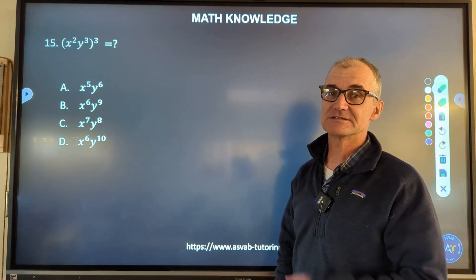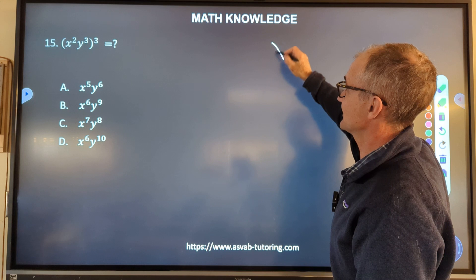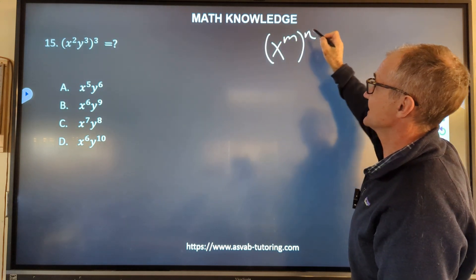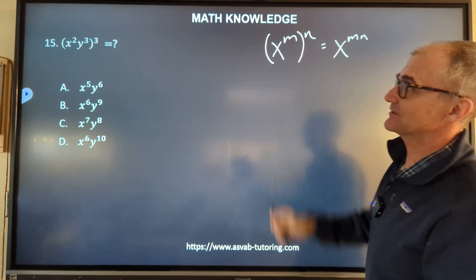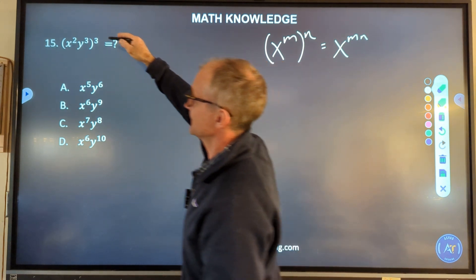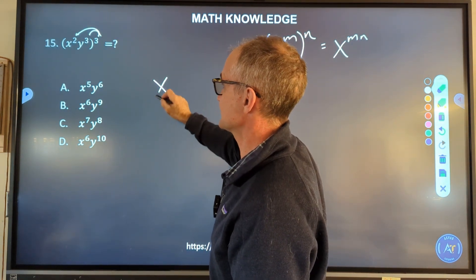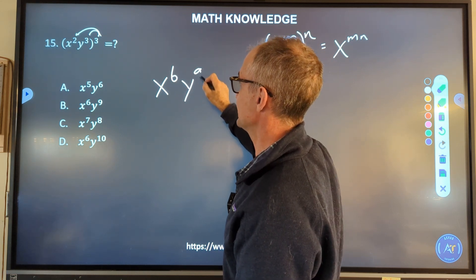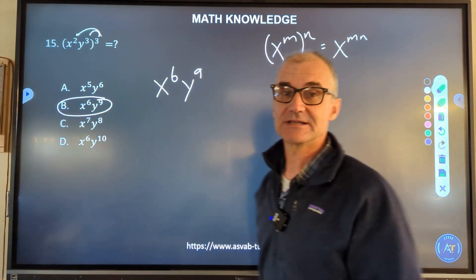Number 15, this is checking the laws of exponents. The law of exponents that we're using here is if I have x^m to the power of n, I multiply those together to get x^(mn). So through those parentheses, I have to multiply them. I got to multiply it by the 2 and then the 3. That's going to give me x^(2×3), y^(3×3), x^6, y^9, answer B right here.